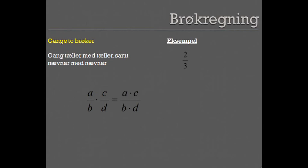Vi ganger her 2 over 3 med bryggen 4 over 5. Ifølge vores regel skal vi altså gange 2 med 4 og 3 med 5. Dette giver 8 over 15.